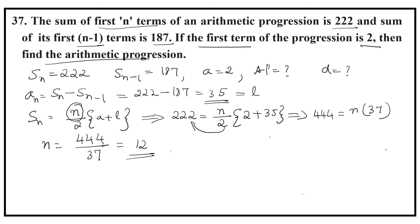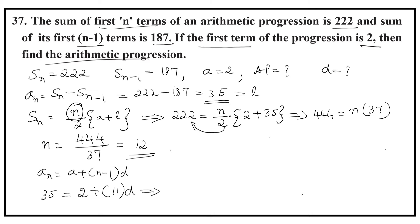Now we can find the common difference. Substituting values in An equals a plus (n minus 1) into d: the nth term, that is the last term, is 35; a is 2; n is 12. So 35 equals 2 plus 11d. It implies that 11d equals 35 minus 2, that is 33. So d equals 3.